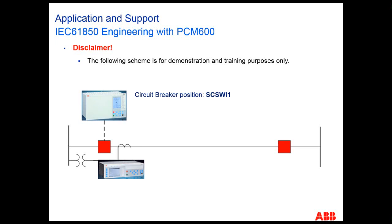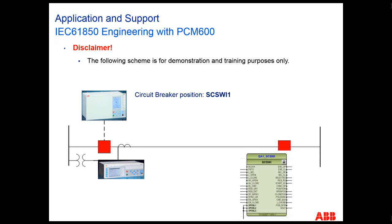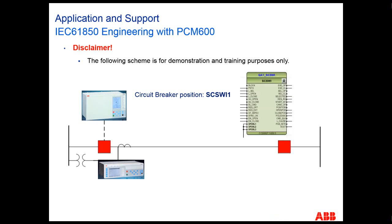The circuit breaker position is available on the logical node SCSWI1. The number 1 at the end means the instance number used for publishing the circuit breaker position. This is the function block available on the logic of the REC670 relay, or bay controller relay. The tripping signal is contained on the logical node SPTPTRC1, where once again 1 is the instance number used for this purpose.